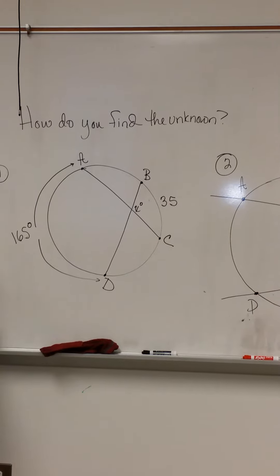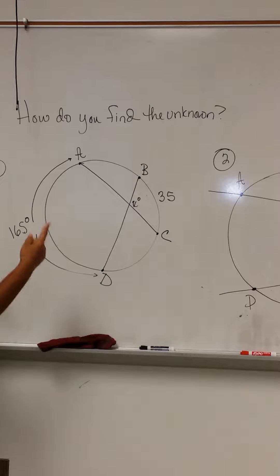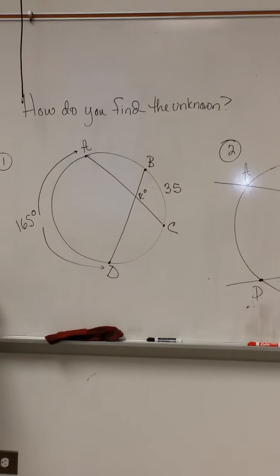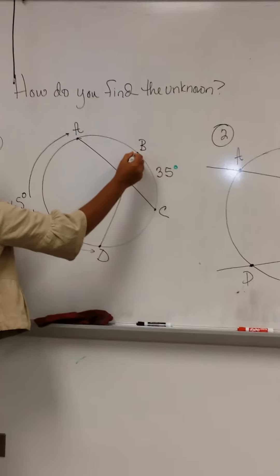And the theorem that we will employ here is to add the two arcs and divide the arcs by two. So we're going to take arc BC, which is 35 degrees,